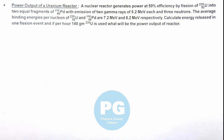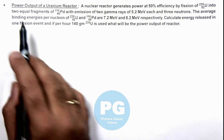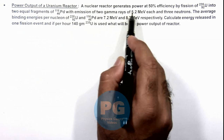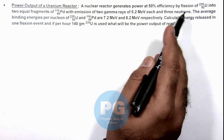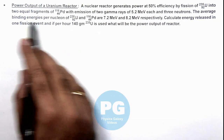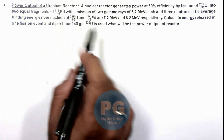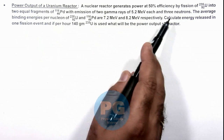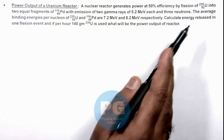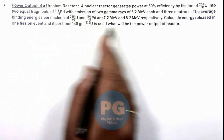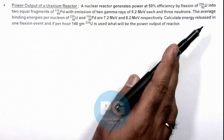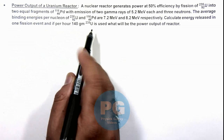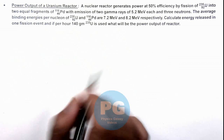In this illustration, we'll calculate the power output of a uranium reactor. We are given that a uranium reactor generates power at 50 percent efficiency by fission of uranium-235 into 2 equal fragments of palladium-116, with emission of 2 gamma rays of 5.2 million electron volts each, and 3 neutrons. We are given the average binding energies per nucleon of uranium and palladium, and we are required to calculate the energy released in 1 fission event, and if 140 grams of uranium is used per hour, the power output of the reactor.